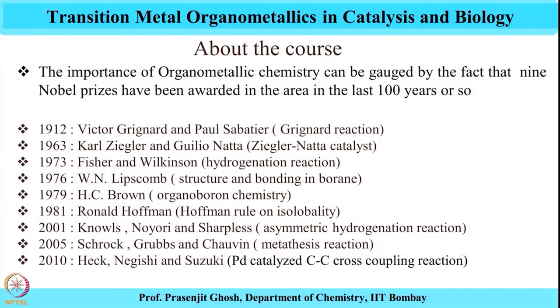This is a tremendous recognition for any field, showcasing the potential utility of transition metal organometallic compounds. To begin with, the first Nobel Prize went to Victor Grignard and Paul Sabatier for the Grignard reagent discovery as early as 1912. This was a seminal discovery which allowed chemists to form carbon-carbon bonds.